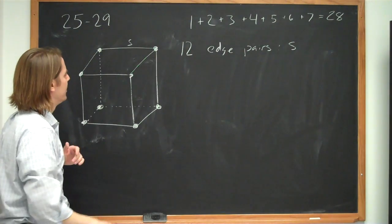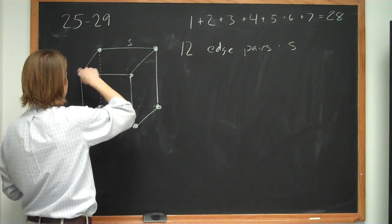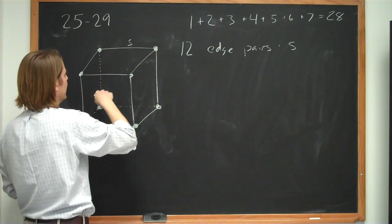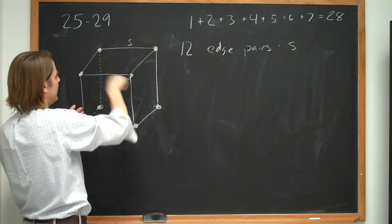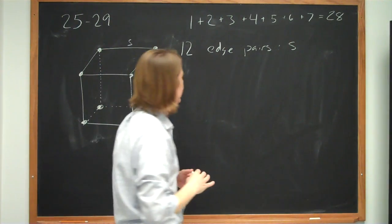So there's 12. There's 1, 2, 3, 4, 5, 6, 7, 8. And then the ones we haven't done yet are 9, 10, 11, 12. So if you count the edges, there's 12 edges.